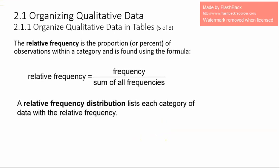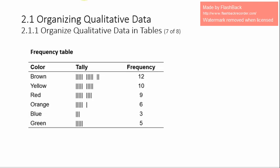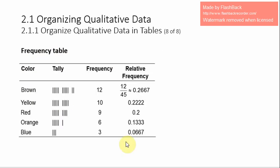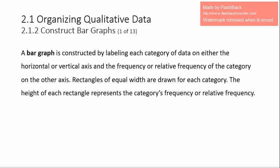Often we want to know the relative frequency of the categories rather than the frequencies themselves. A relative frequency is the proportion or percent of observations within a category, found by taking the frequency and dividing it by the sum of all frequencies. A relative frequency distribution lists each category of data with its relative frequency. Using the M&M frequency table, we divide each frequency by 45 to get the relative frequencies.